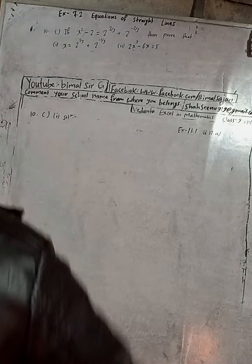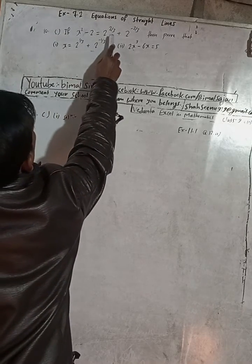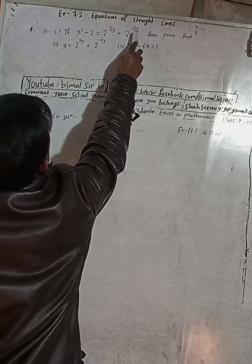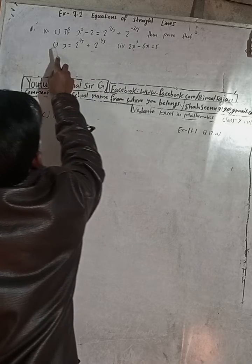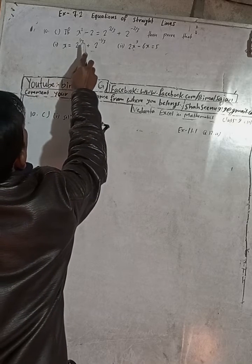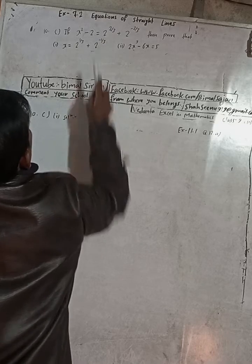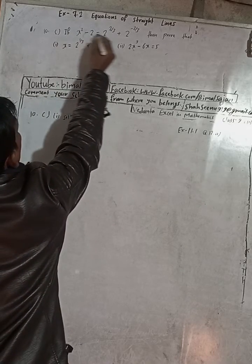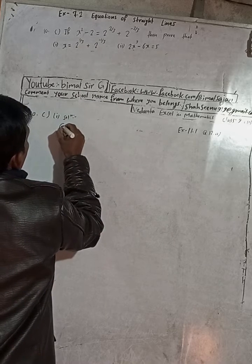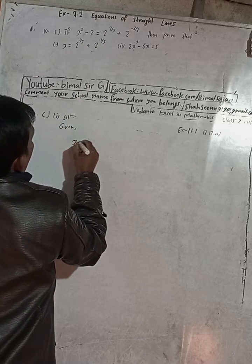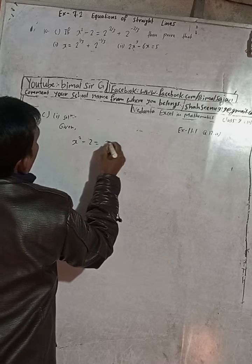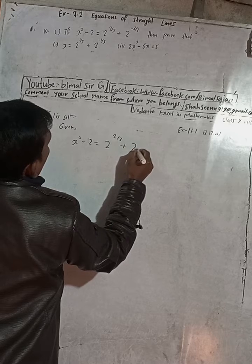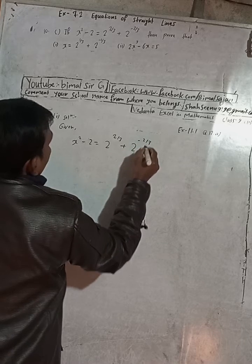The question is: if x squared minus 2 is equal to 2 to the power 2 by 3 plus 2 to the power minus 2 by 3, then prove that x is equal to 2 to the power 1 by 3 plus 2 to the power minus 1 by 3. We have to prove this. So what I am going to do here — 'if' means this is given, so the given is x squared minus 2 equals 2 to the power 2 by 3 plus 2 to the power minus 2 by 3.